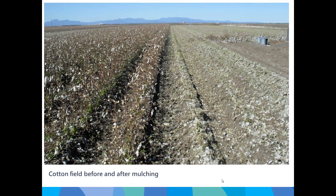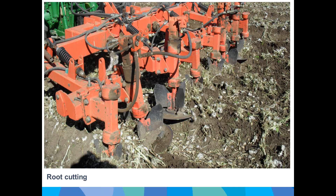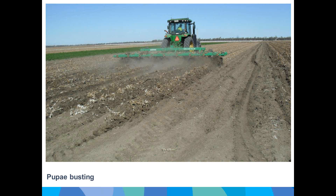Here is an example of strips before and after mulching, giving an idea of the amount of stubble going in. The next step in post-harvest operations is root cutting, done about 2 to 5 centimetres below the surface. This prevents the cotton plant from growing again, as cotton is an indeterminate perennial plant that can harbour pests if grown off-season.